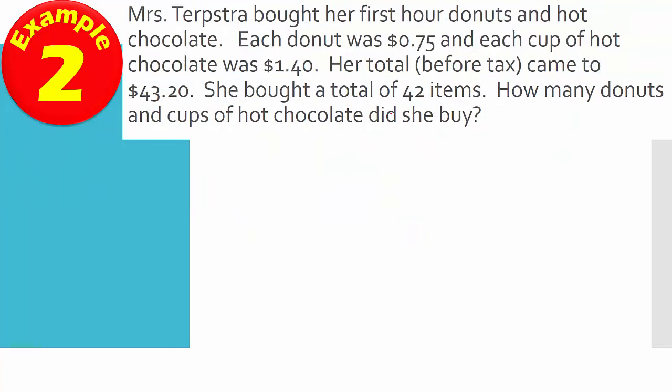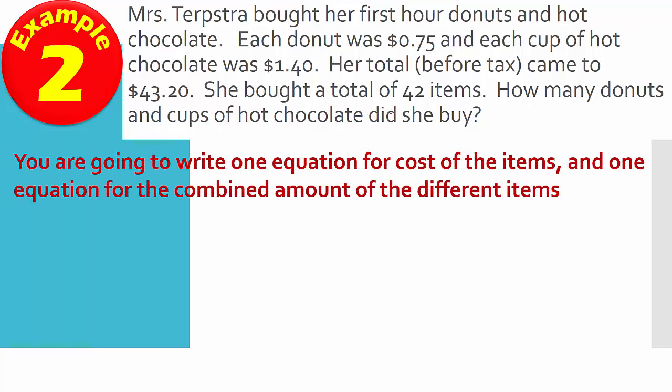Mrs. Terpster brought her first hour donuts and hot chocolate. Each donut was $0.75 and each cup of hot chocolate was $1.40. Her total before tax came to $43.20. She bought a total of 42 items. How many donuts and cups of hot chocolate did she buy? So in this one, again, we're going to write one equation for the cost of the items and one equation for the combined amount of the different items.